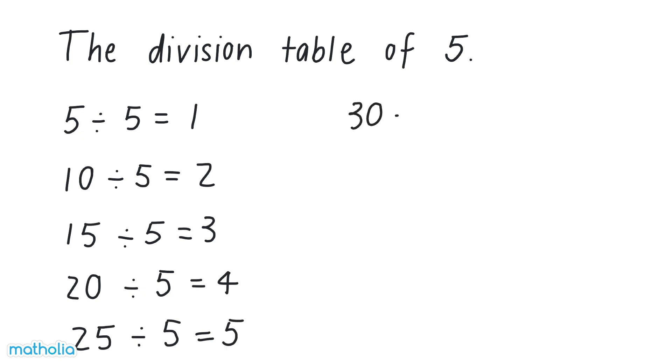Thirty divided by five equals six. Thirty-five divided by five equals seven. Forty divided by five equals eight. Forty-five divided by five equals nine. Fifty divided by five equals ten.